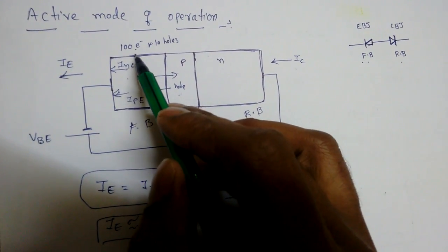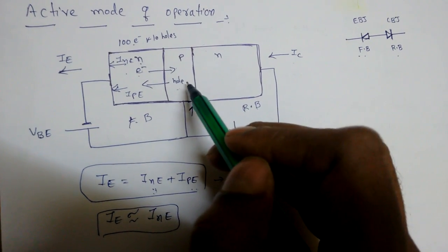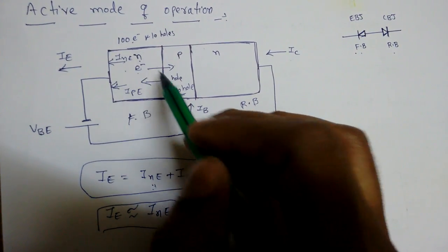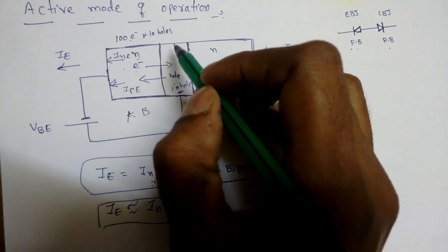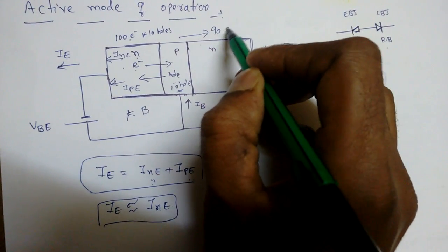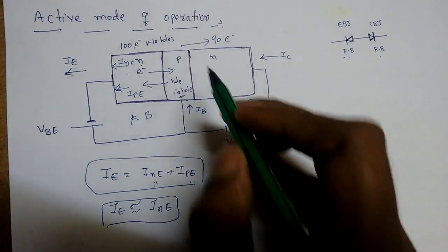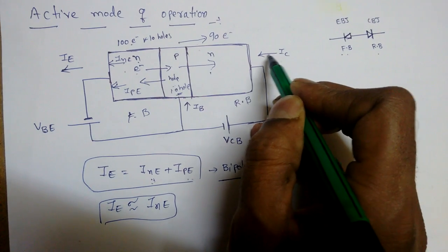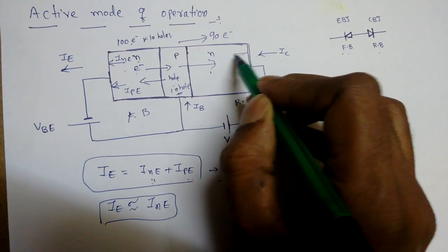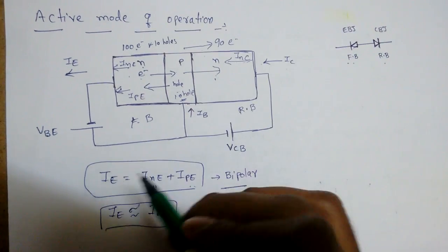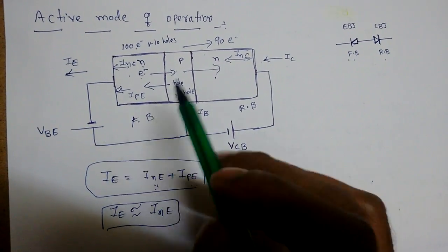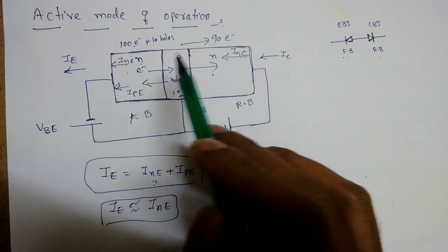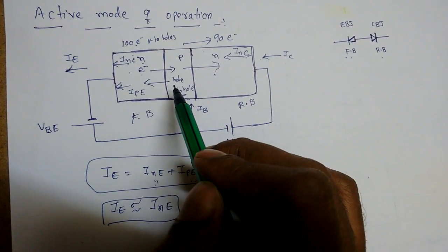Now, suppose 100 electrons move from emitter to base. The base has about 10 holes, so 10 electrons recombine with those holes, and the remaining 90 electrons reach the collector. The current IC flows in the direction opposite to the electron flow into the collector. So 100 electrons come in, 10 recombine, and 90 are collected.